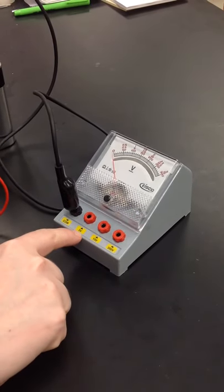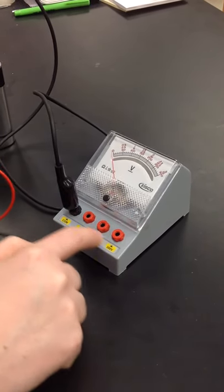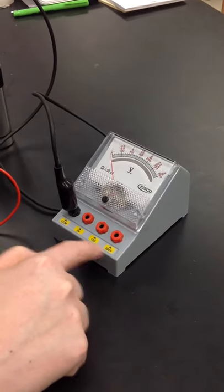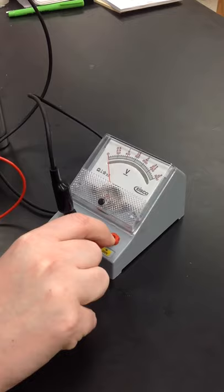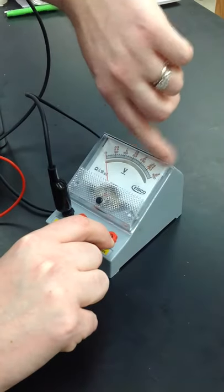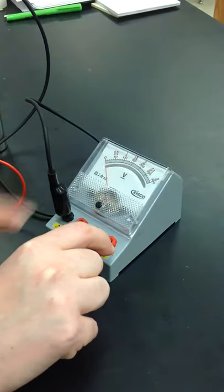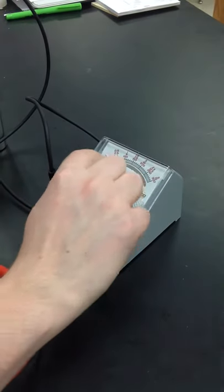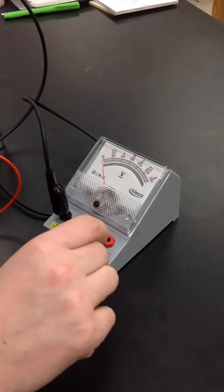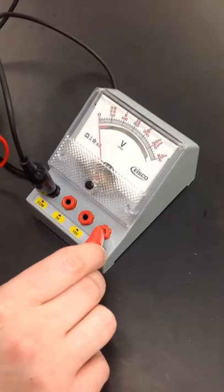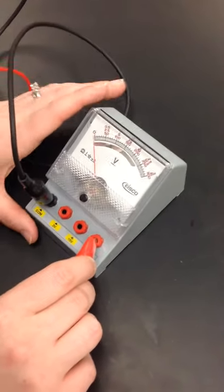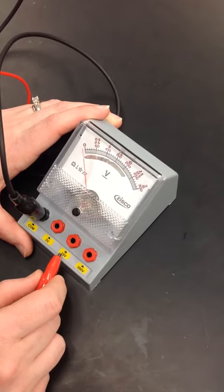So this would not be the right scale for us to use. We might want to try something much larger, like 300 volts. And you can see that on this one, I'd be reading the bottom most line where it ends in 300. It says 300 here and 300 there. But it'd be very hard to read because the needle barely moved.